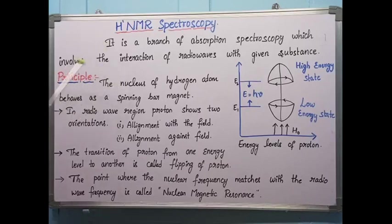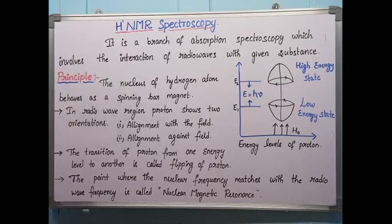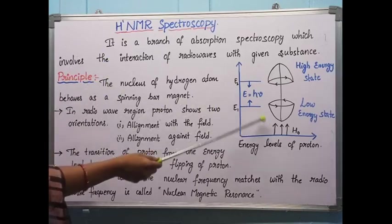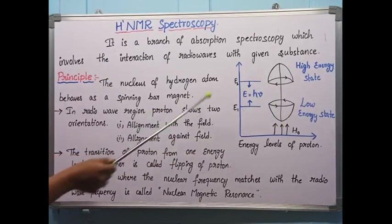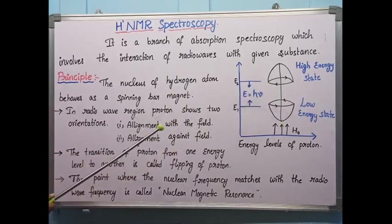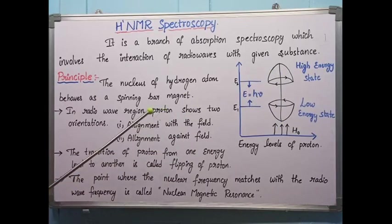In proton NMR, the proton has a positive charge. Every charged species behaves like a spinning bar magnet, meaning it shows precession. When undergoing precession it produces a magnetic field. When we place this proton in an external magnetic field and pass radio waves, it shows two orientations relative to the external magnetic field.